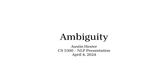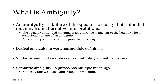Hello, this is Austin Hester and this is my presentation on ambiguity. So what is ambiguity? It's the multiple meanings — a word can have multiple meanings or a phrase could have multiple ways to parse the grammar of it. Lexical ambiguity is when a word has multiple definitions, and syntactic ambiguity is where a phrase has multiple grammatical parses.